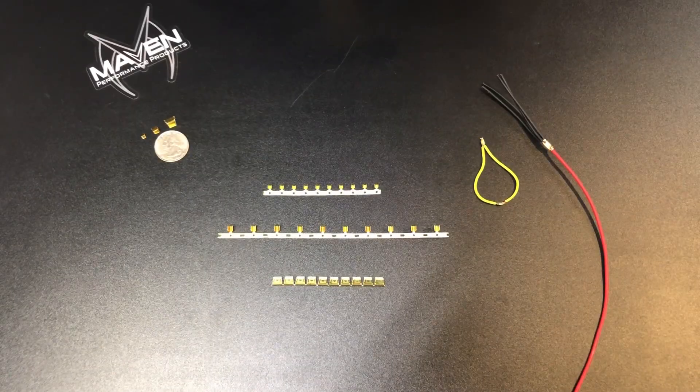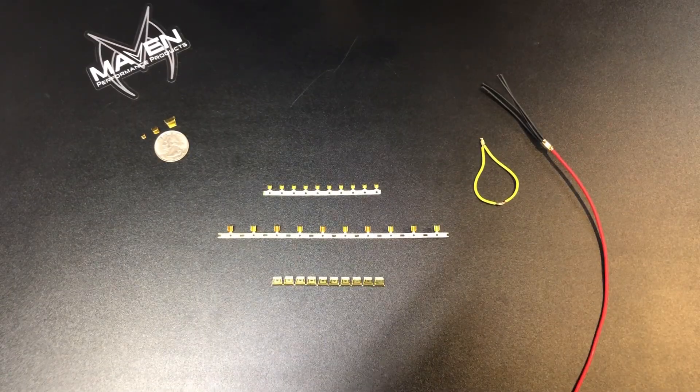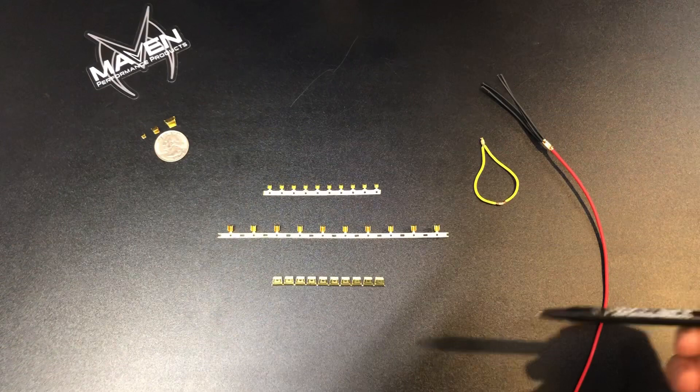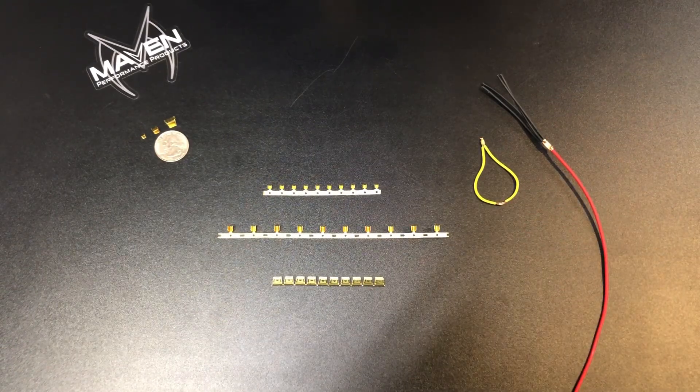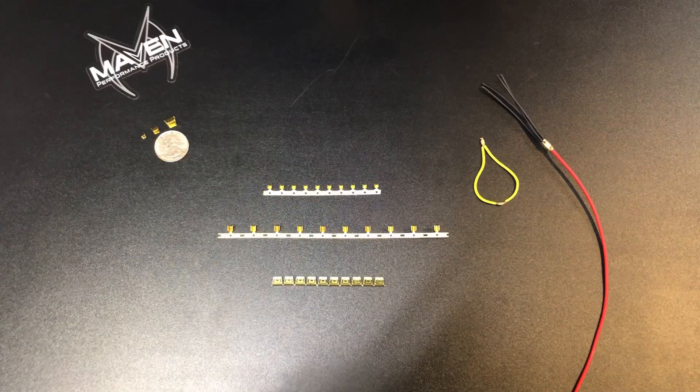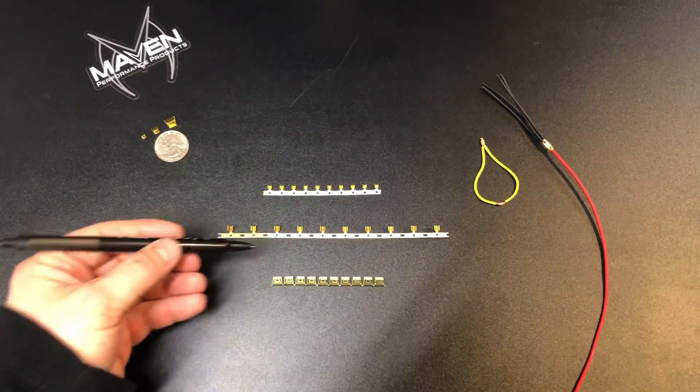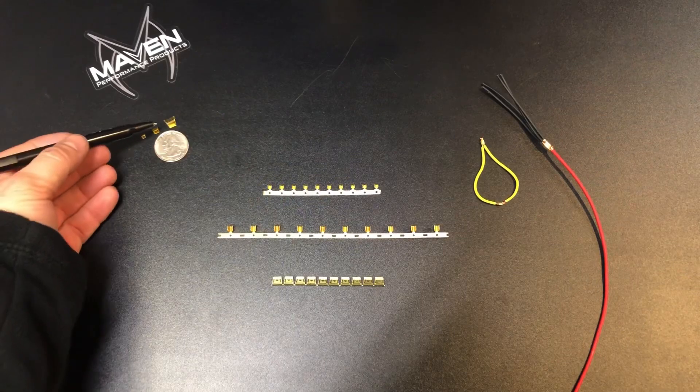All right, here are the open barrel crimps, or splices. On the website we've got them in small, medium, and large. They're a TE product and they are made of brass. They do come in a stamped strip, so you break them off individually and they look like this.